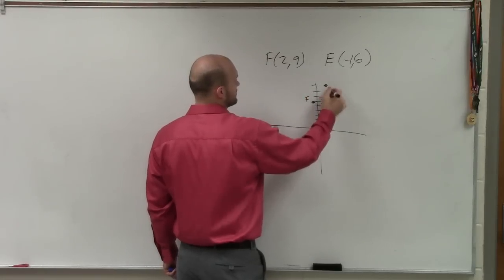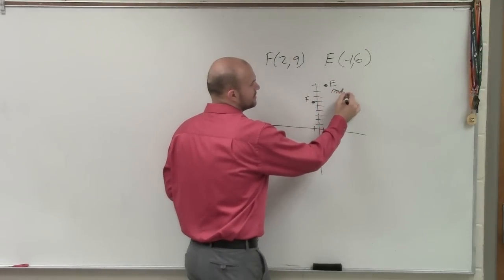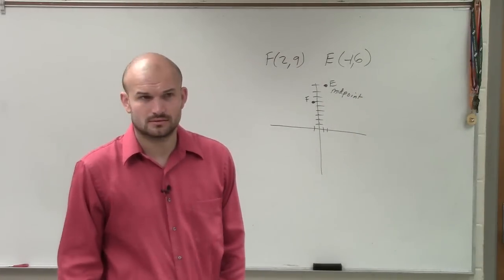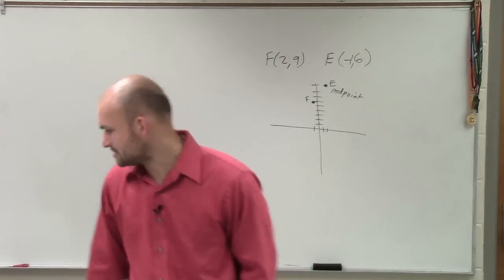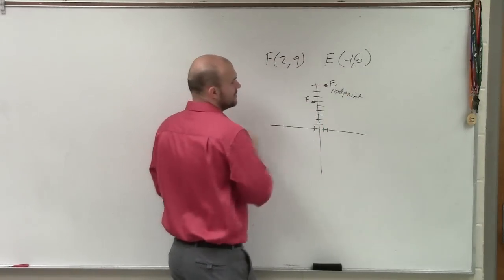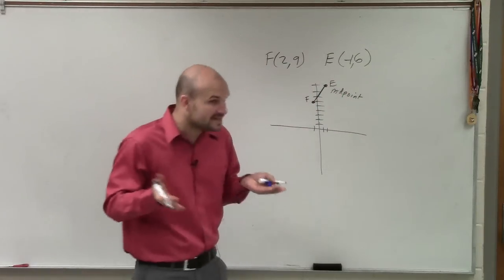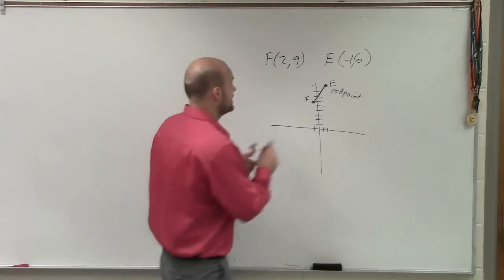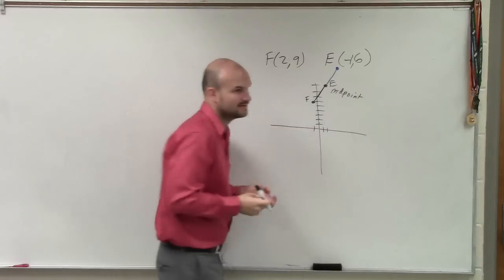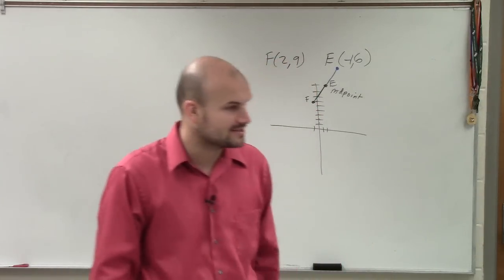OK, so that's F. That's E, right? And what they're saying is E is the midpoint. And what they want you to do is find the other endpoint. So if here's the midpoint, that means E is in the middle, correct? So that means there's a line that goes like this, and there's another point right there. But we need to be able to figure that out. What exactly is that point, right?